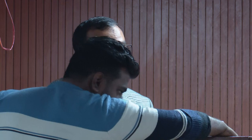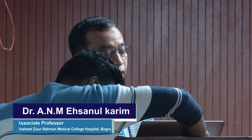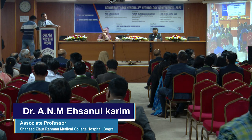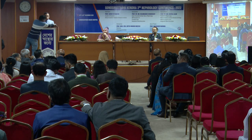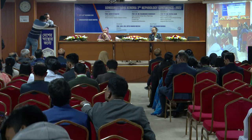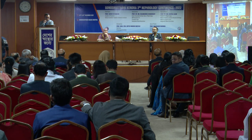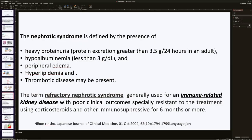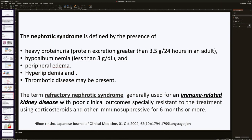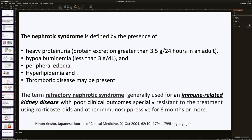Nephrotic syndrome is defined by the presence of heavy proteinuria, hypoalbuminemia, peripheral edema, hyperlipidemia, and thrombotic disease. The term nephrotic syndrome is generally used for immune-related kidney disease with poor clinical outcome, especially when resistant to treatment with steroids or immunosuppressives for 6 months. Refractory nephrotic syndrome is specifically termed for immune-related kidney disease, not for diabetes mellitus. However, when nephrotic syndrome in diabetic kidney disease is intractable, it is sometimes termed refractory nephrotic syndrome in diabetes mellitus.